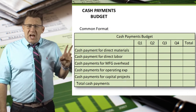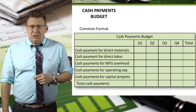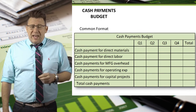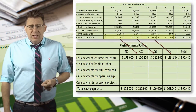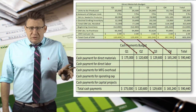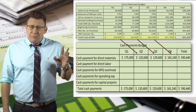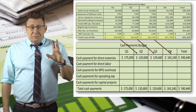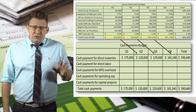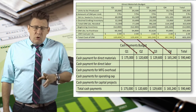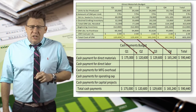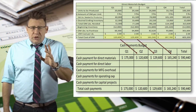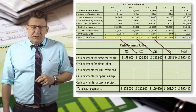Here you can see a common format for the cash payments budget. Often it just lists the items that will have cash disbursements. Using the direct materials budget, we can see the cost of materials purchased. Let's assume for simplicity's sake that purchases are paid for in the quarter following the purchase.